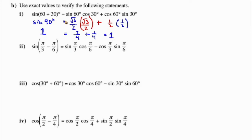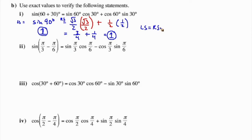The final right side is 1 and the final left side is 1, so the left side equals the right side. It seems to suggest that this pattern will work for the sine of one angle plus another. Of course, we're using specific angles, so it doesn't prove that this is true, but it does give us a suggestion that it is.